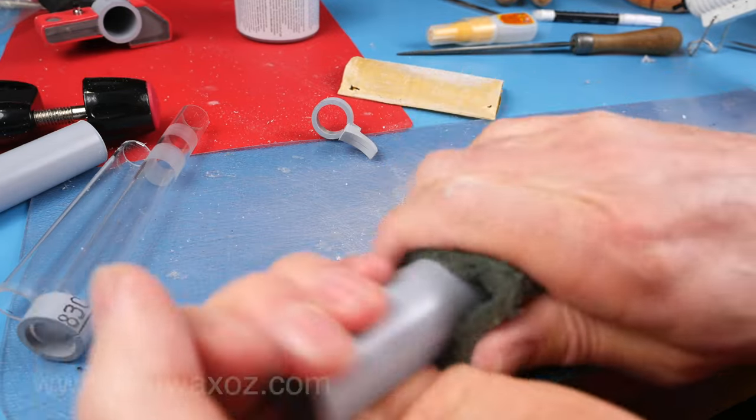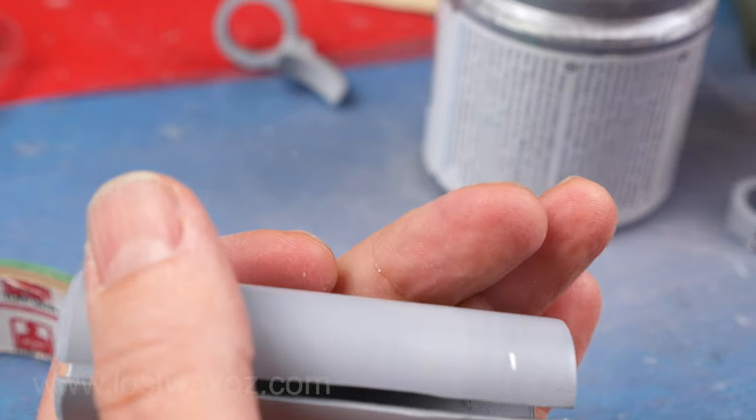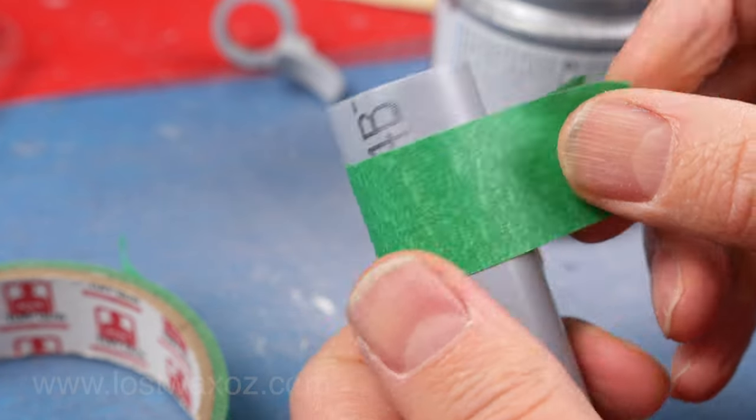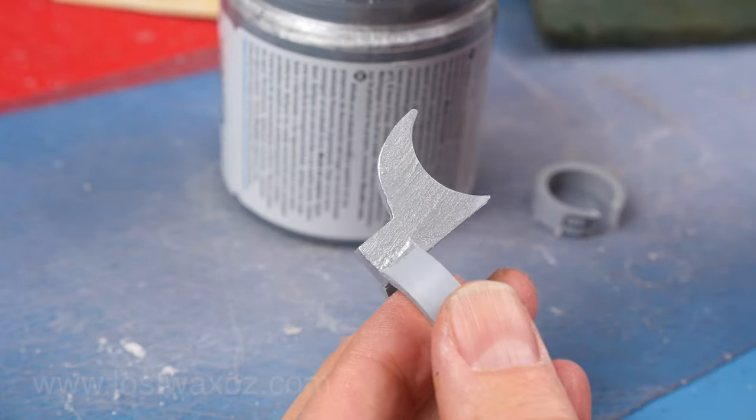Before we assemble the barrel we want to paint the end of the mini barrel silver so we don't get any paint on our acrylic tube. So mask off a 10 millimeter wide section on the not beveled end of the mini barrel and paint that part silver. And you might as well paint the barrel trigger while you have your silver paint out.